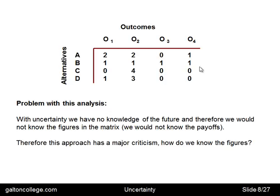So it's not something we can use in practice. What this will do is tell us more about ourselves and the way we make decisions than about how to use this to make the best decision, because we don't simply have these figures. So let's look at some rules for how we make decisions. The first one is called Maximin — a Maximin approach to decision making under uncertainty.